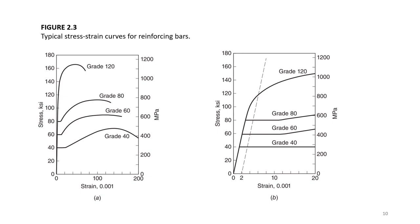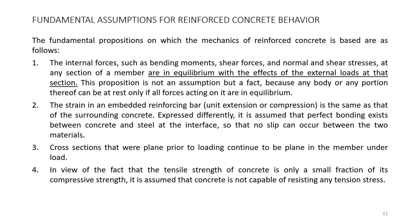We will use 60 grade, or 70 grade, or 50 grade steel with modulus of elasticity as 29 × 10⁶ PSI. On page 11, four important points are listed. Number one: internal forces such as bending moment, shear force, and normal and shear stresses at any section of a member are in equilibrium with the effect of external loads at that section. This is not an assumption. The strain in embedded reinforcing bar is the same as that of the surrounding concrete.